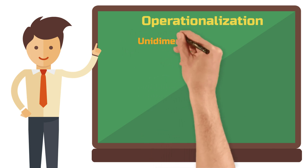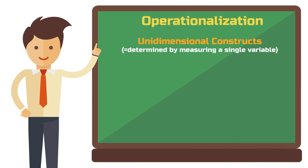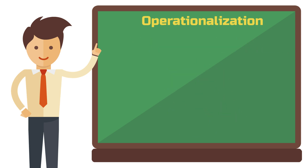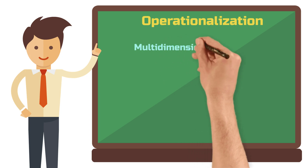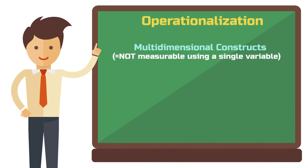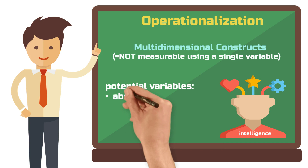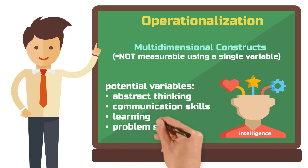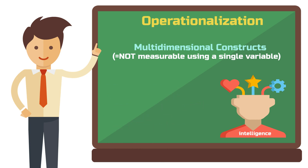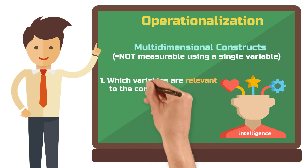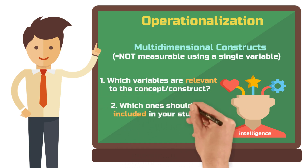An instance of a construct that can be determined by measuring just one single variable is weight. If we can measure weight in kilograms using a scale, then assessing the construct weight is relatively easy. However, many other constructs that researchers aim to measure are more complex. For instance, if we want to build a construct around intelligence, it cannot be assessed through a single variable. To make assertions about intelligence, researchers may consider variables such as abstract thinking, communication skills, learning, problem solving and more. During the operationalization of a multidimensional construct, researchers must decide which variables are relevant to the concept or construct and which ones should be included in their study.